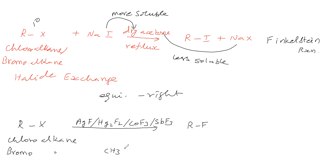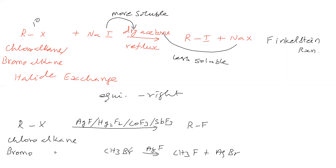For example, if we take CH3Br and treat it with AgF, we get CH3F plus AgBr. That means this halogen and this halogen are getting exchanged. Therefore it is called halide exchange.